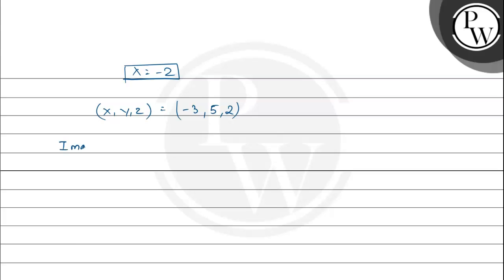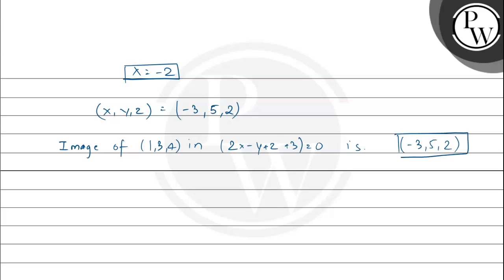Therefore, the image of the point (1, 3, 4) in the plane 2x minus y plus z plus 3 equals 0 is (minus 3, 5, 2). I hope you understood it well — best of luck!